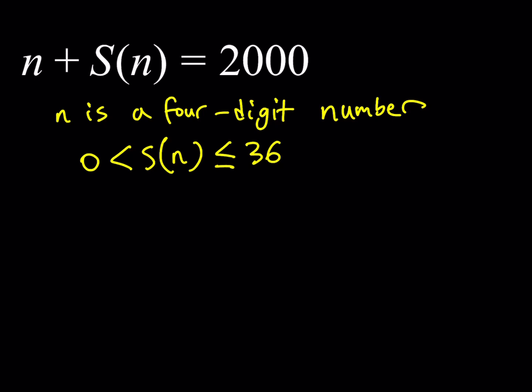Now, this implies some interesting things, because if you go ahead and plug those values into the equation, you're going to notice that, for example, if S of n is near zero, then you can just subtract 2000 from zero, and that's going to give you 2000. And if you subtract 36 from 2000, you're going to get 1964. So basically, this requires that n needs to be between 1964 and 2000. Obviously, it cannot equal 2000, because S of n cannot equal zero.